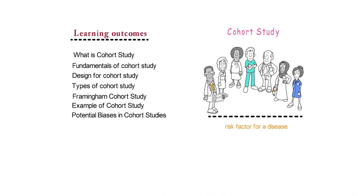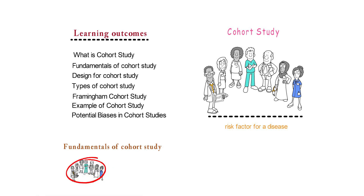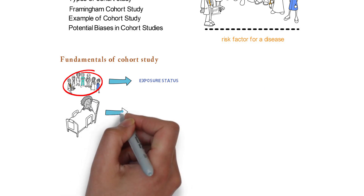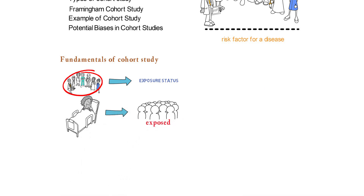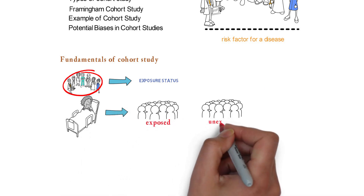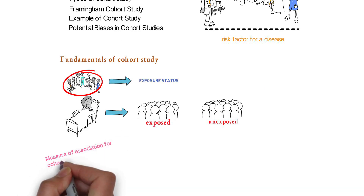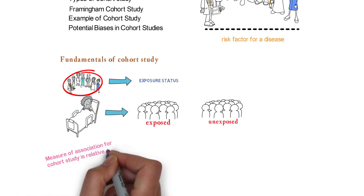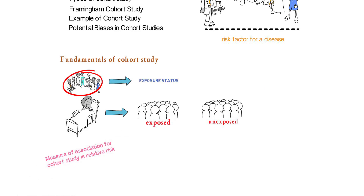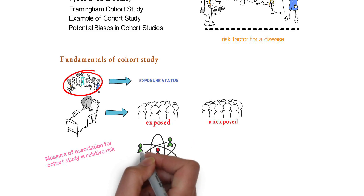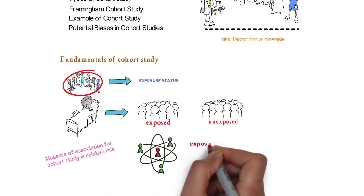have something in common, for example a characteristic or risk factor for disease. Fundamentals of cohort study: cohorts are selected on the basis of exposure status. Outcomes of cohort study are incidence of disease in exposed and unexposed groups. The measure of association for cohort study is relative risk. Cohort study is conducted when exposure for disease is rare.